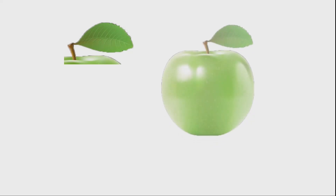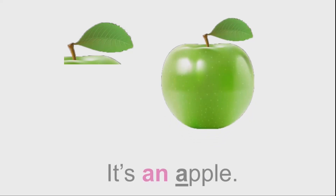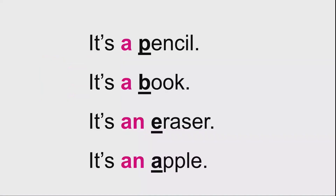Good. Now you look at the last picture, and you tell me what it is. Yes, right. It's an apple. Repeat after me. It's an apple. One more time. It's an apple. Now, look at these sentences again, please. It's a pencil. It's a book. It's an eraser. It's an apple. The short words A and AN are called indefinite articles.